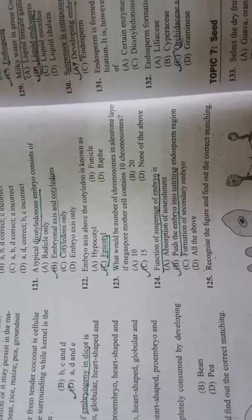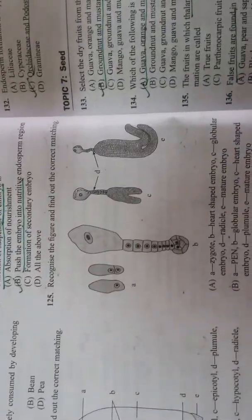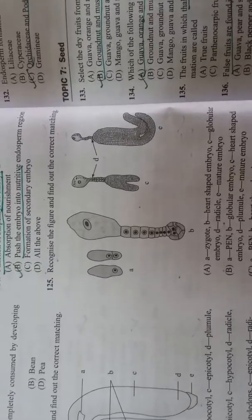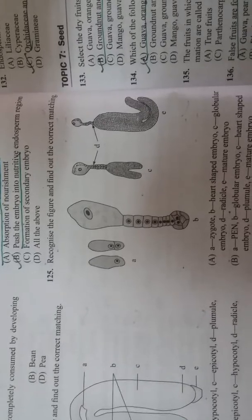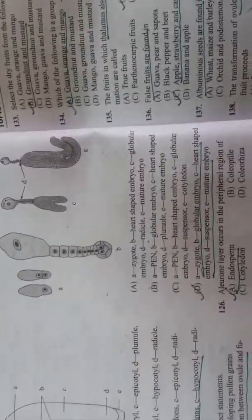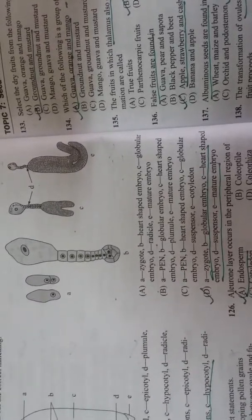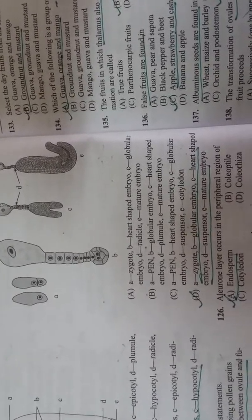This is the last of today's question, 100. Recognize the following figure and find out the correct matching A, B, C, D. A is very small, B is the biggest. If we see figure-wise, C is middle level. A is zygote, B is globular embryo, C is heart-shaped embryo, D is suspensor, E is mature embryo.